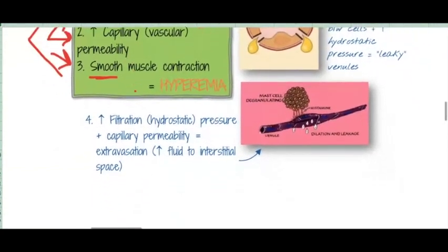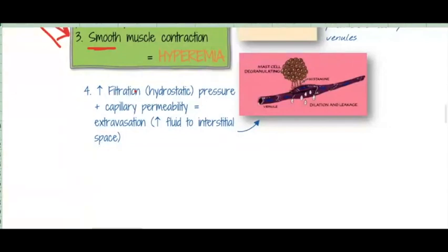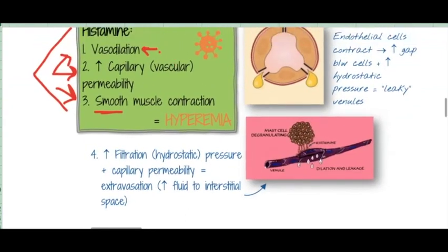When you have vasodilation and increased capillary permeability, you end up with hyperemia — 'hyper' meaning lots of or too much, and 'emia' always meaning blood — so you have too much blood in that area. What happens when you have a ton of blood in one area is you get an increase in filtration or hydrostatic pressure.